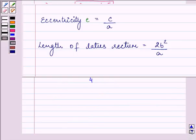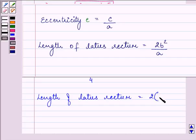And further, we have the length of latus rectum is equal to 2b square, b is 3, by a, that is 4. So, we have the answer as 9 by 2.